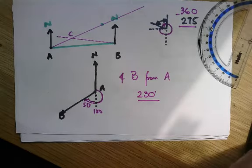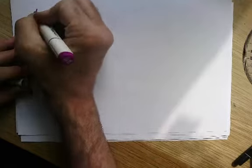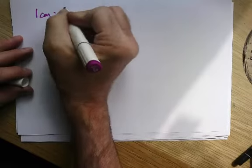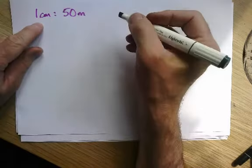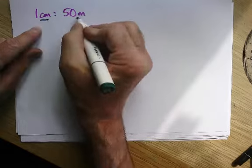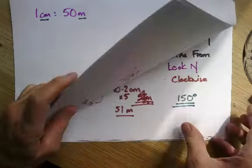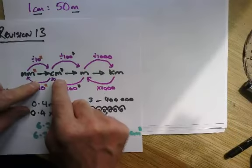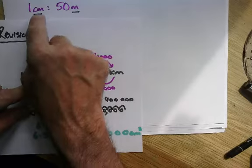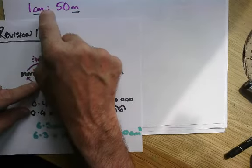Let's try this question. It says a map has a scale of one centimeter representing 50 meters, so I can write it in ratio form. It says put a circle around the ratio which is equivalent. This is centimeters to meters, so I'm going to change the meters to centimeters. I need to times by a hundred.